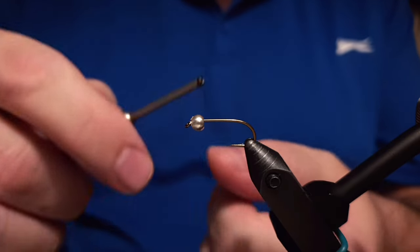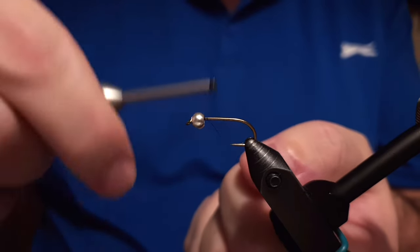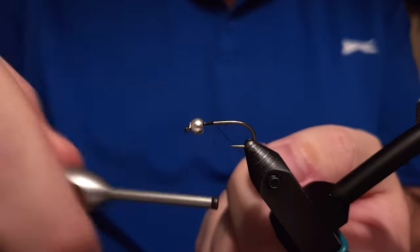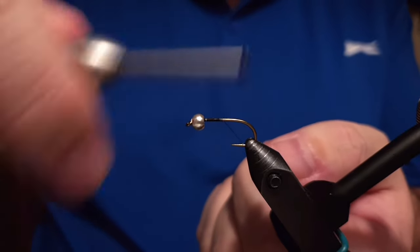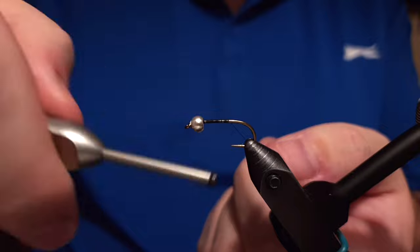Hello there, Ivar from Ivar's Fly Workshop. Today we're going to tie a fly called the Killer, the Black Killer by Thor Nilsson.